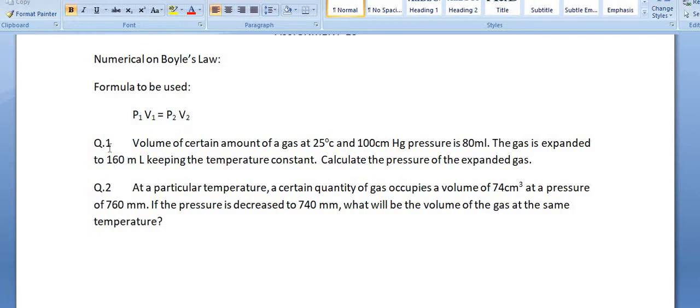So, we have got question number one: volume of certain amount of gas at 25 degrees Celsius and 100 cmHg pressure is 80 mL. The gas is expanded to 160 mL. Keeping the temperature constant, calculate the pressure of the expanded gas.